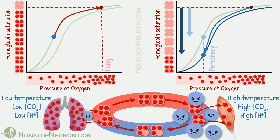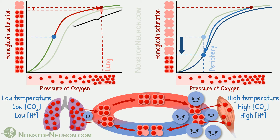At the lungs, the situation is different. Here all three factors — temperature, carbon dioxide, and hydrogen ion concentration — are low due to ventilation and washing out of carbon dioxide. So the curve is on the left side. Compared to the right-sided curve, this leftward position helps load more oxygen at the same partial pressure. However, in quantitative terms, this increase in loading is less compared to the extra unloading at peripheral sites. The reason is that towards high partial pressure the curve is flat, so the impact of the shift is relatively small.